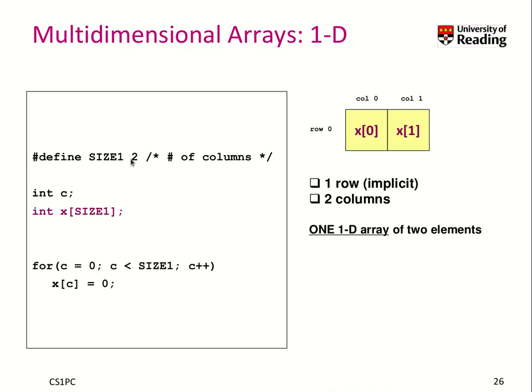We defined here size 1 to be 2, and you could think about it as a row that contains two columns, so we have two values. So we have one row with two columns, and we can iterate over it, going over each element of this individual row step by step.